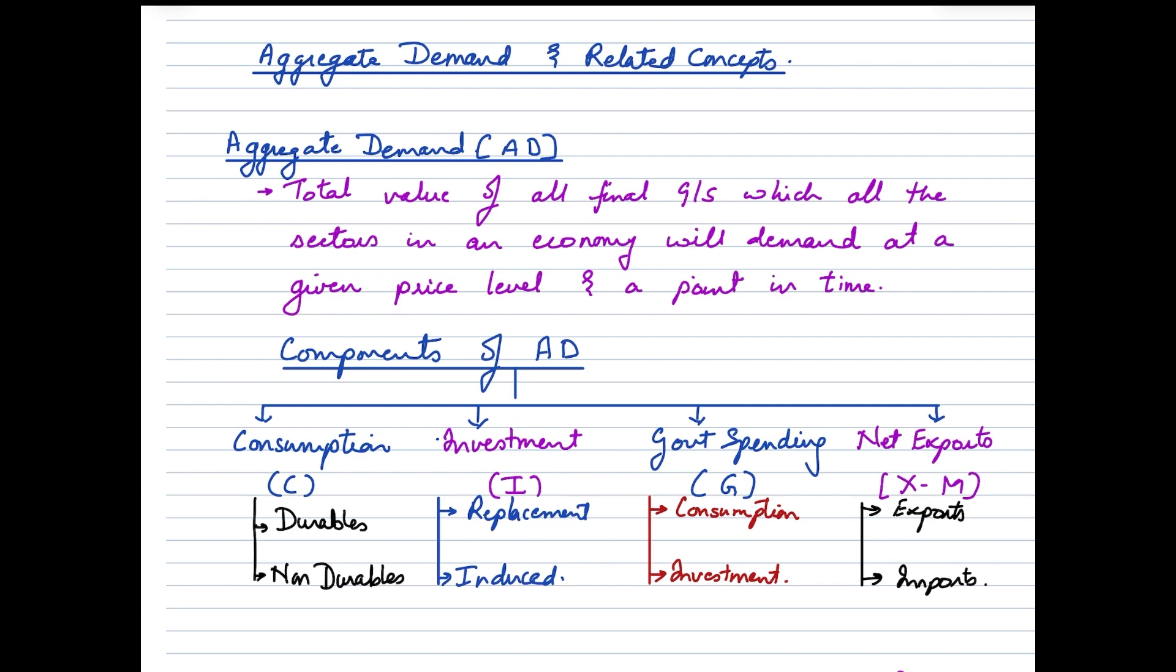When we talk about components of aggregate demand, we have four components which are listed here. The first component is consumption expenditure written as C. Second is investment expenditure written as I. The third is government spending written as G. And the fourth and final one is net exports which is written as X minus M.